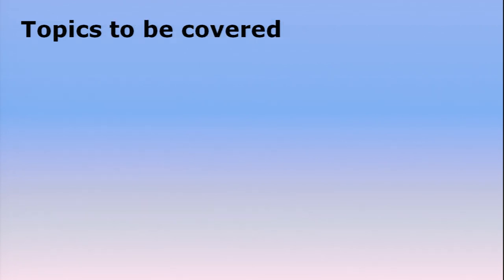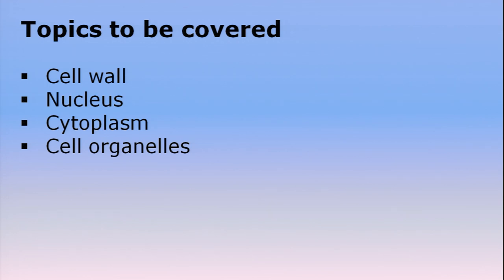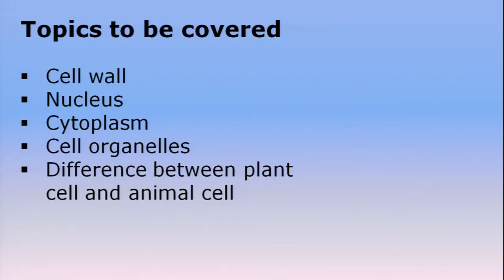The topics we are going to cover today are the structure and function of cell wall, nucleus, cytoplasm, all the important cell organelles like endoplasmic reticulum, Golgi apparatus, lysosomes, mitochondria, etc., and at the end we will understand the difference between plant cell and animal cell.